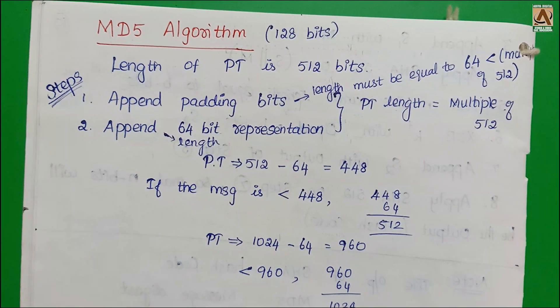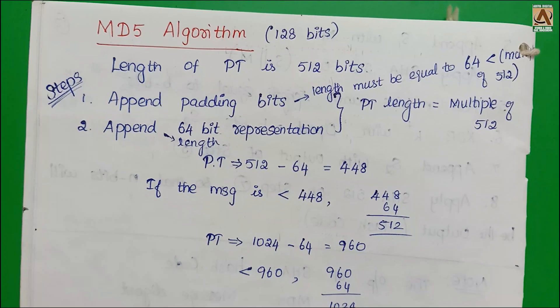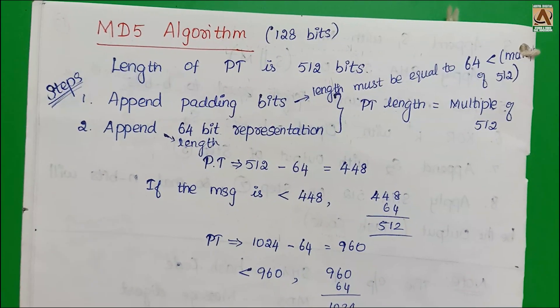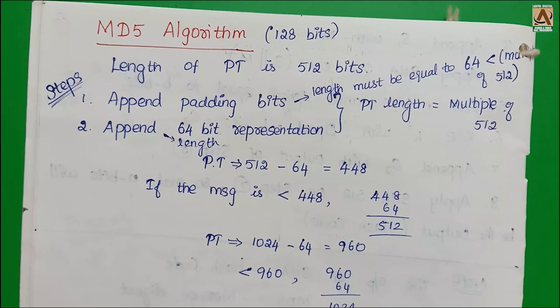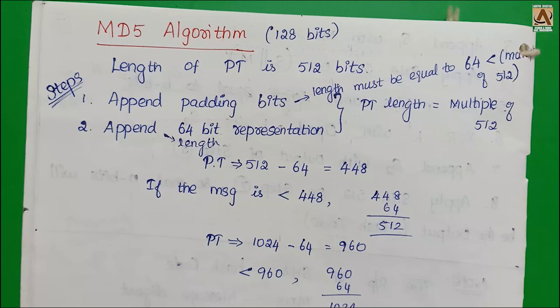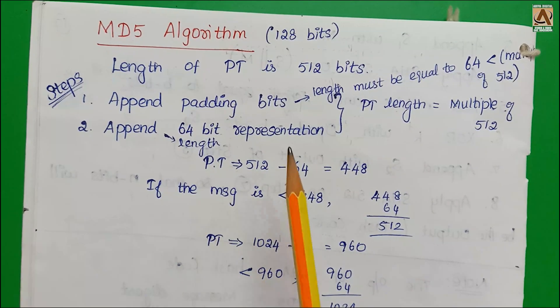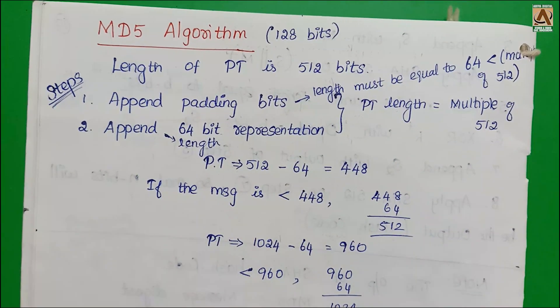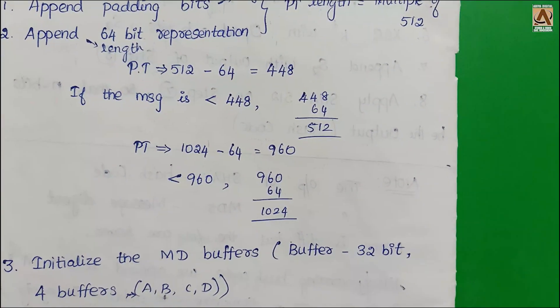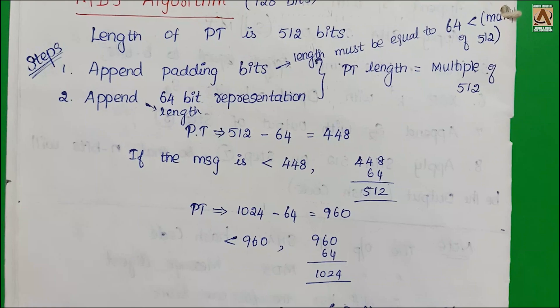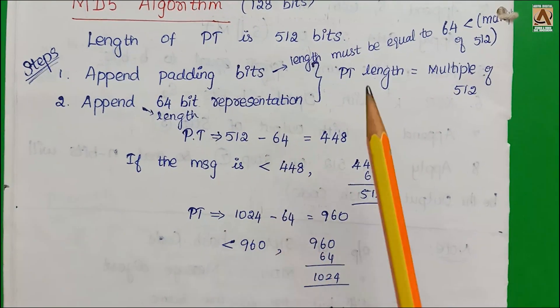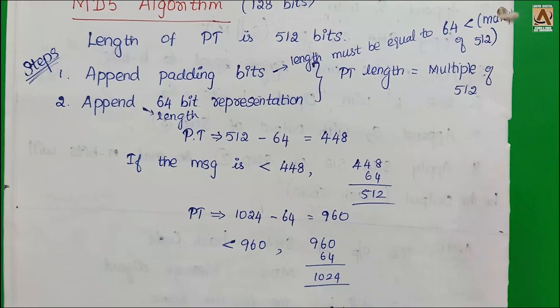MD5 algorithm, message digest algorithm. This algorithm uses plaintext length of 512 bits and outputs 128 bits. There is a 5-step process. First, we append padding bits so the length must be a multiple of 512.